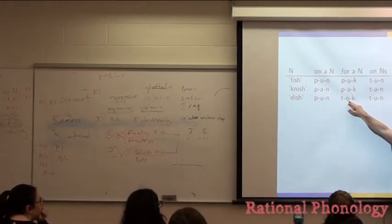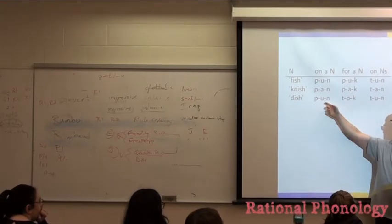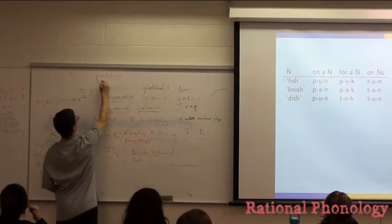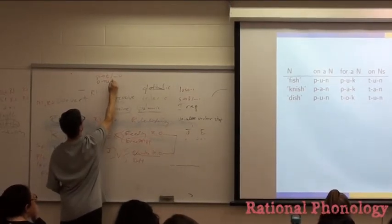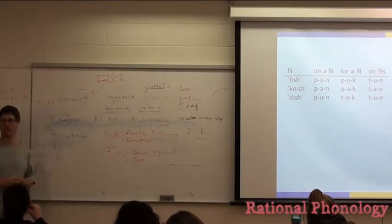But since this is an O, why isn't an O here and here? Well, it must be that we had a rule. I'm just going to give this to you. O becomes U before N.